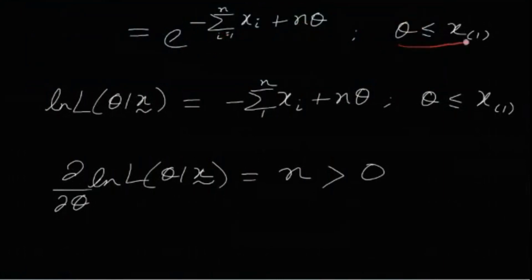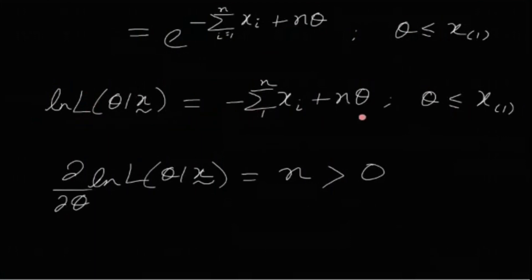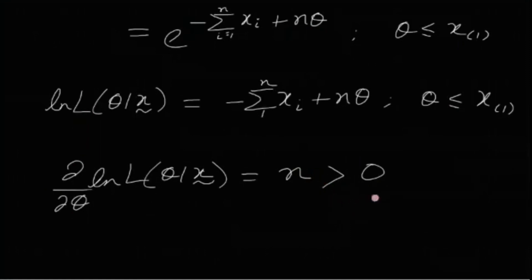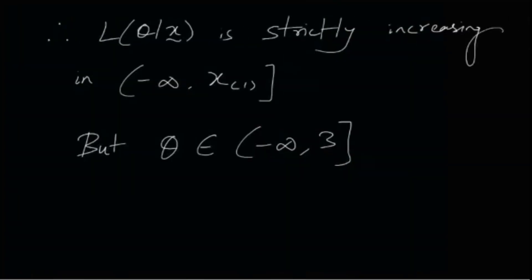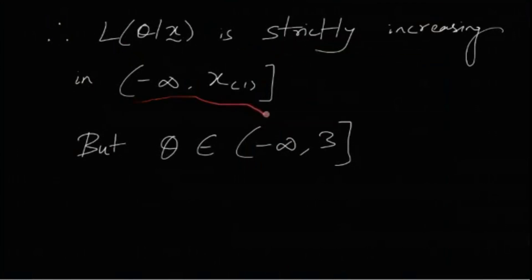Taking the natural log, the log-likelihood is −Σxᵢ + nθ for θ ≤ x_(1). The derivative with respect to θ is n, which is positive. Since the derivative is positive, the log-likelihood function is strictly increasing on (−∞, x_(1)].